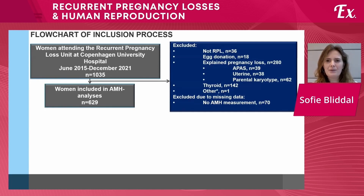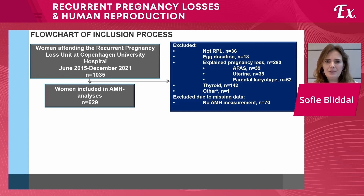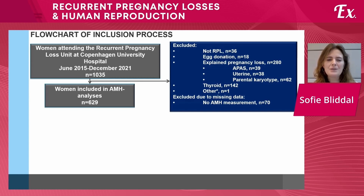Out of 1,035 women referred during the time period, we had to exclude a large number, mainly due to explained pregnancy loss, including thyroid dysfunction and autoimmunity. We also excluded some who did not have AMH measurements — this was due to a short period where the clinic could not afford AMH measurements, so there was no bias in who was offered the measurements. In total, we had measurements from 629 women.